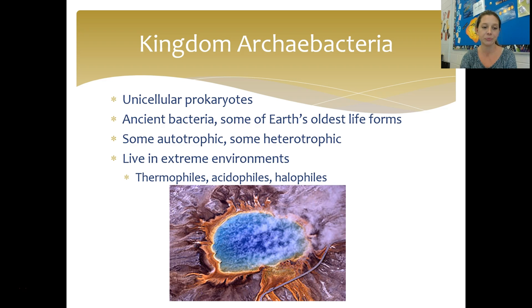Plants are eukaryotic, multicellular, and autotrophic — meaning they make their food through photosynthesis. Their cell walls are made of a substance called cellulose. Animals are also eukaryotic and multicellular, but heterotrophic. All animals are able to move at some point during their life cycle — even sponges can move during their life cycle. Animals do not have cell walls; they only have cell membranes.